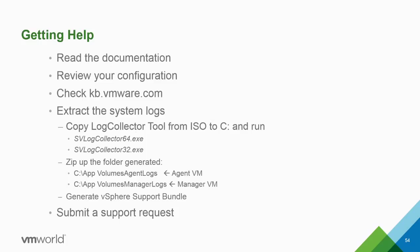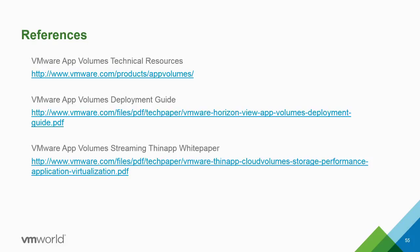For getting help: read the documentation, check your configuration, and visit kb.vmware.com — new KBs come out regularly as issues are found and fixed. There's a log collector tool on the ISO in 64-bit and 32-bit versions that lets you collect agent and manager logs into a support bundle — especially useful when working with tech support. If you're having problems, submit a support request. Don't assume it's your fault — it could be a product issue.